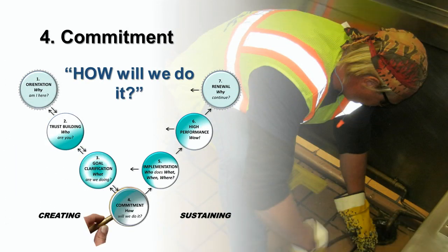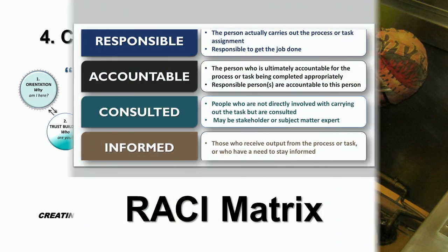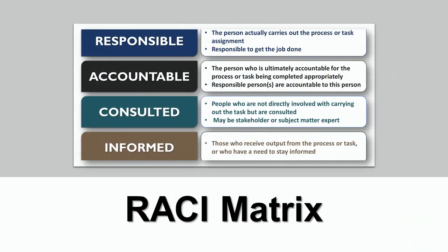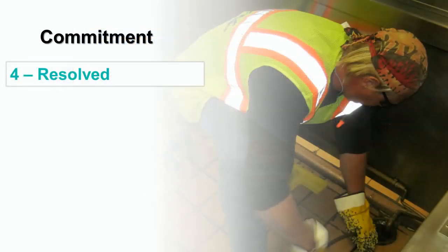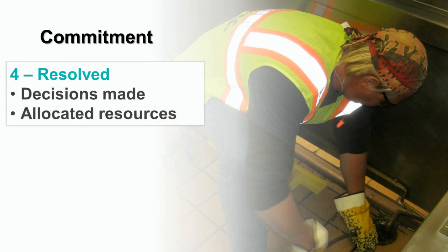Step 4: Commitment. Commitment is the turning point of the model because teams that lack commitment create ambiguity about direction and priorities. One way to create commitment is to clarify roles. This can be done using a RACI chart that outlines who is responsible, accountable, consulted, and informed for each task. When commitment challenges are resolved, you will see decisions made, allocated resources, and assigned roles.